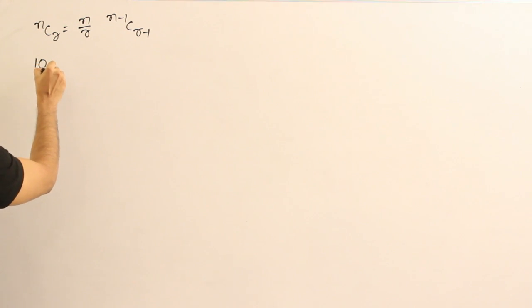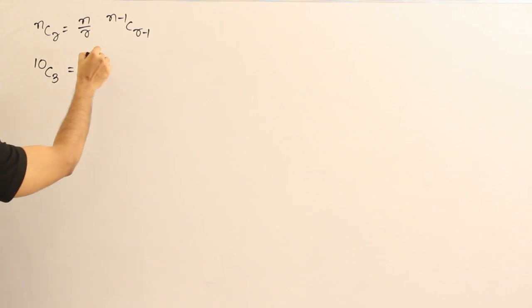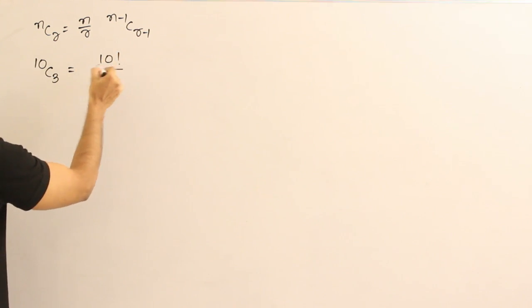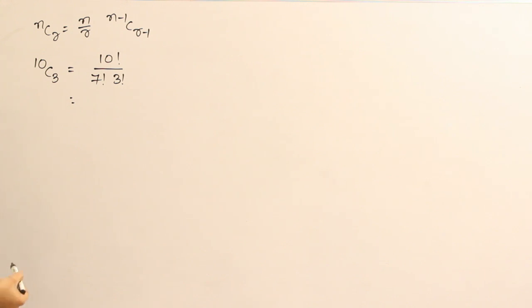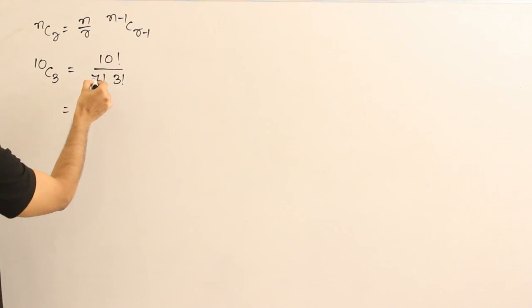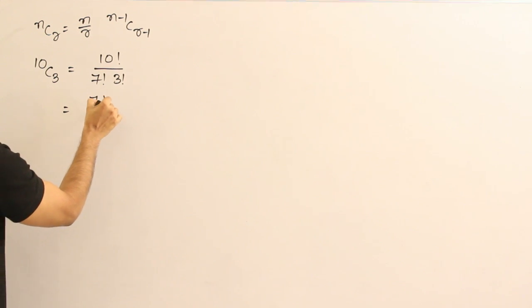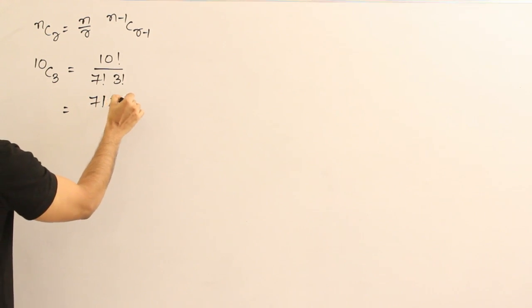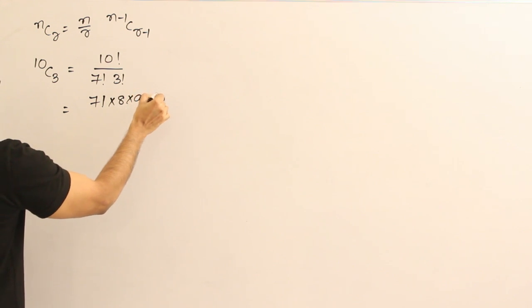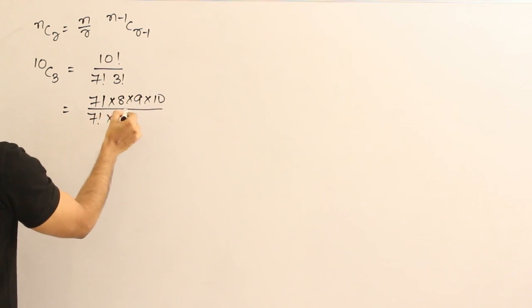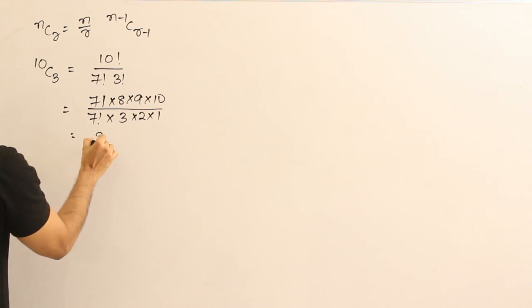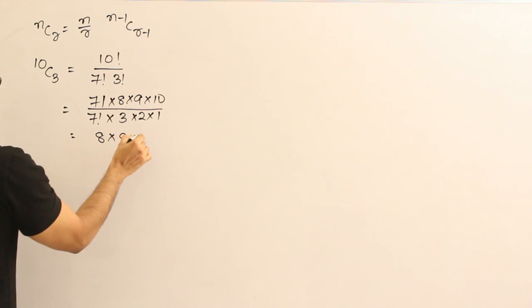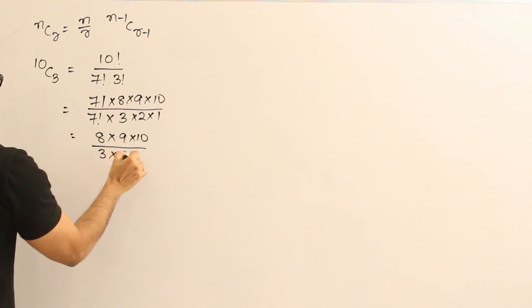Let us say I want to find 10C3. We know that it is 10 factorial divided by 10 minus 3 factorial, which means 7 factorial into 3 factorial. If I cancel out 7 factorial, I can write 10 factorial as 7 factorial into 8 into 9 into 10, divided by 7 factorial into 3 factorial, which is 3 into 2 into 1. So it is nothing but 8 into 9 into 10 divided by 3 into 2 into 1.